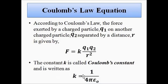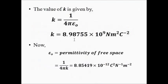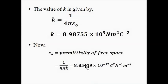Coulomb's constant k is written as 1 over 4 pi epsilon-naught, where epsilon-naught is the permittivity of free space, also called absolute permittivity. The value of k is 8.98755 × 10⁹ N·m²·C⁻². The value of epsilon-naught, calculated as 1 over 4 pi k, is 8.85419 × 10⁻¹² C²·N⁻¹·m⁻².